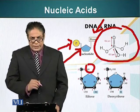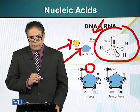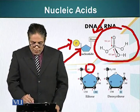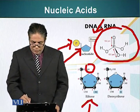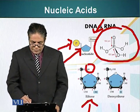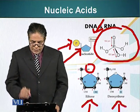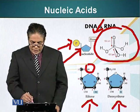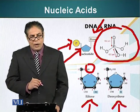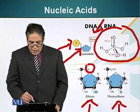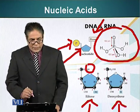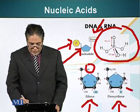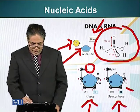Nucleic acids have two types of pentose sugars: ribose and deoxyribose. The difference is the hydroxyl group present on carbon atom number 2. Ribose has that hydroxyl group, whereas deoxyribose does not have this hydroxyl group.